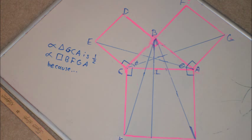First, triangle GCA is congruent to triangle BHA because of the SAS postulate. Line CA is congruent to line HA because they are both sides of square CAHK. Line AG is congruent to line AB because they are also sides of the same square, which is square BFGA. Lastly, angle GAC of triangle GCA is 90 degrees plus beta, and angle BAH of triangle BHA is also 90 degrees plus beta. So they are congruent.